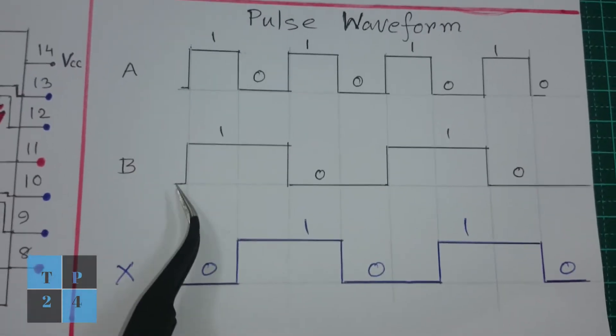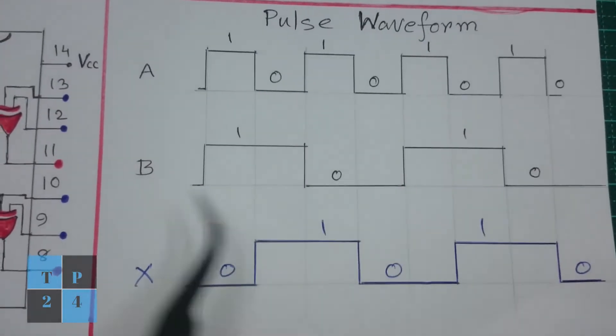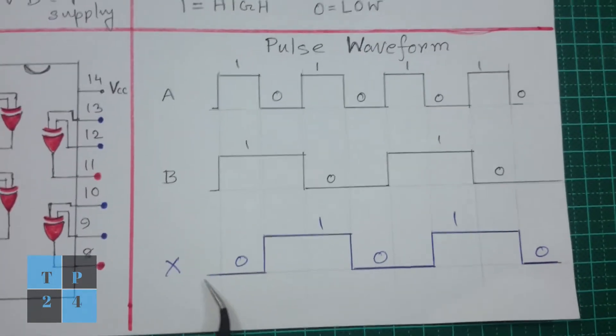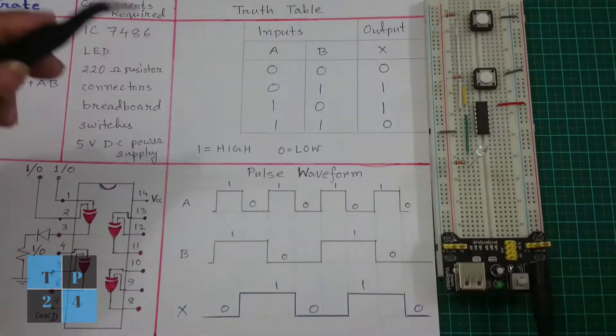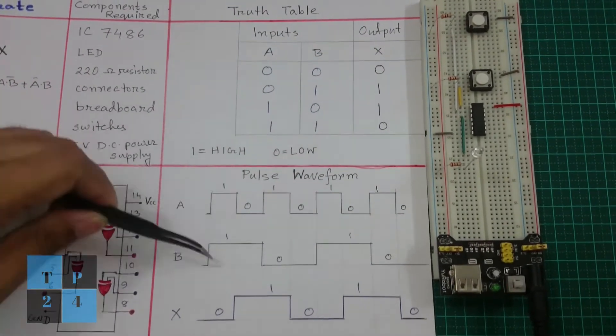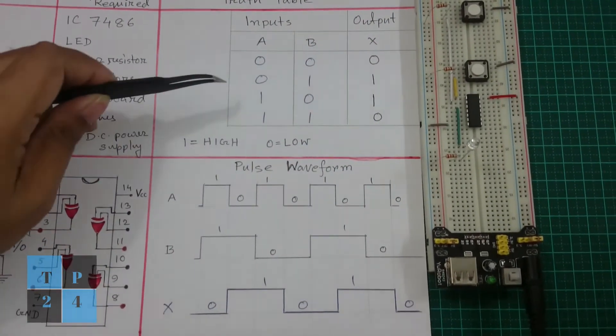And this waveform into input B I will get the output waveform in this shape if I look at the waveforms.